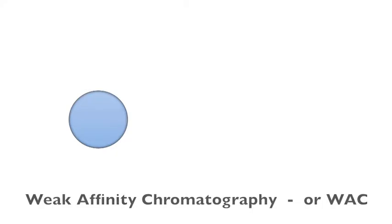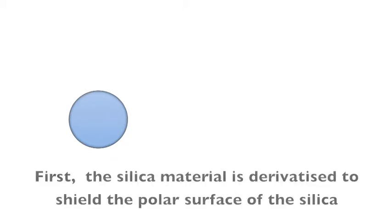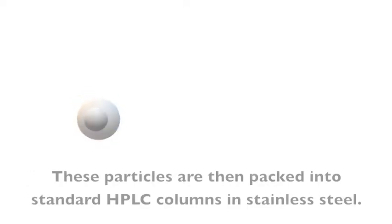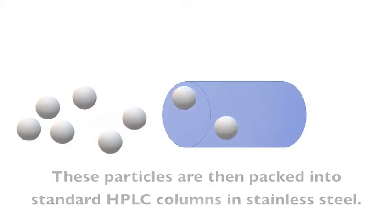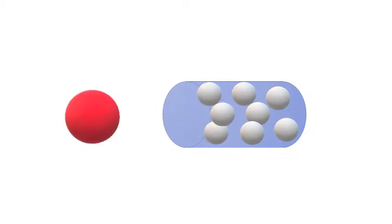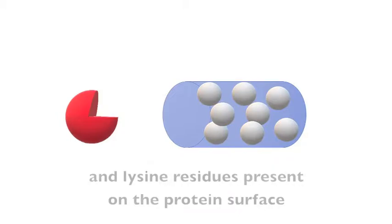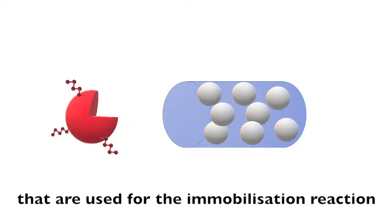Weak affinity chromatography, or WAC, uses silica particles as support material for production of WAC columns. First, the silica material is derivatized to shield the polar surface of the silica and to add functional groups on the surface that work for protein immobilization. These particles are then packed into standard HPLC columns in stainless steel. The target protein is depicted here with an active binding site and lysine residues present on the protein surface that are used for the immobilization reaction.